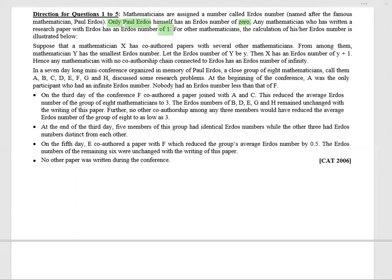Understand the logic: Erdős himself is zero, anybody co-authoring with him gets the number one. For any other mathematician, the calculation of his or her Erdős number is as follows: suppose a mathematician X has co-authored a paper with several other mathematicians. From among them, mathematician Y has the smallest Erdős number — let that smallest Erdős number of Y be y. Then X has an Erdős number of y plus one.